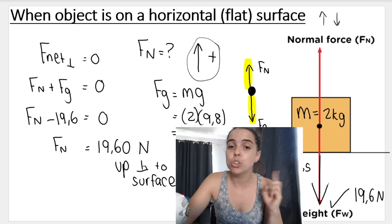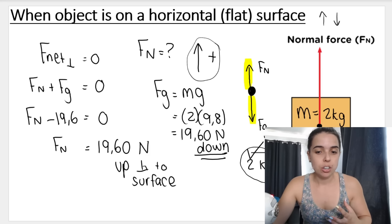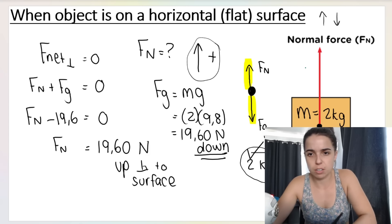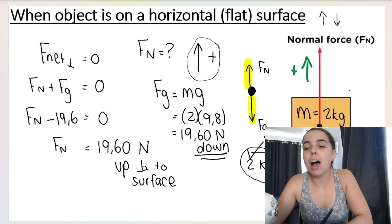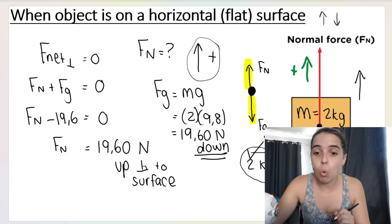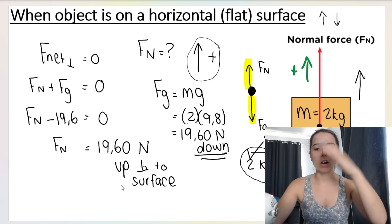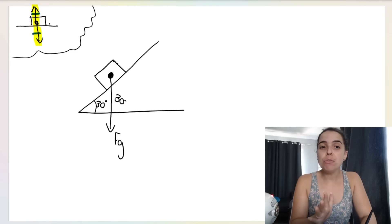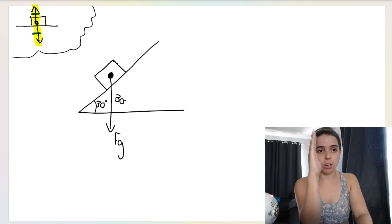You might think this seems unnecessary since we know the normal force equals the weight on a flat surface. And yes, if the weight is 19.6 N, then the normal force is the same. But knowing how to set it up this way is very important for more complicated situations, which I will demonstrate. There are no other forces in the perpendicular or Y direction here, but that is not always going to be the case.